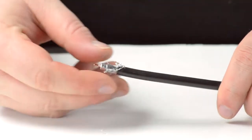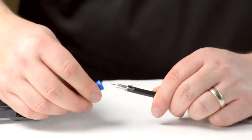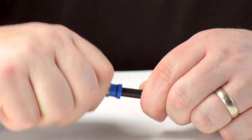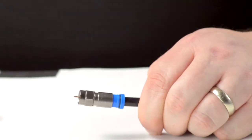Fold back the braided shield and insert the connector housing onto the cable jacket. Apply pressure and twist to make sure the pin is able to reach the end of the connector housing.